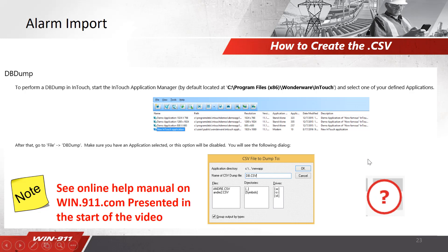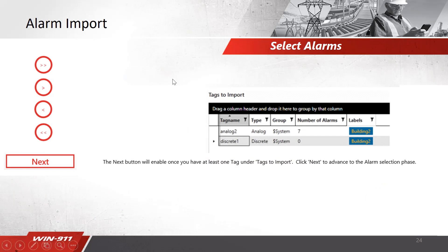Also, inside of WIN911 there's a question mark icon up top. If you click that, it's interactive and will take you to specific information related to the page you're on. Once you have the CSV file, you upload it and you'll be on the alarm import page. Use the arrows to point your alarms over — select all, all back, or individual items — and choose which alarms you want to bring into WIN911 using drag and drop.